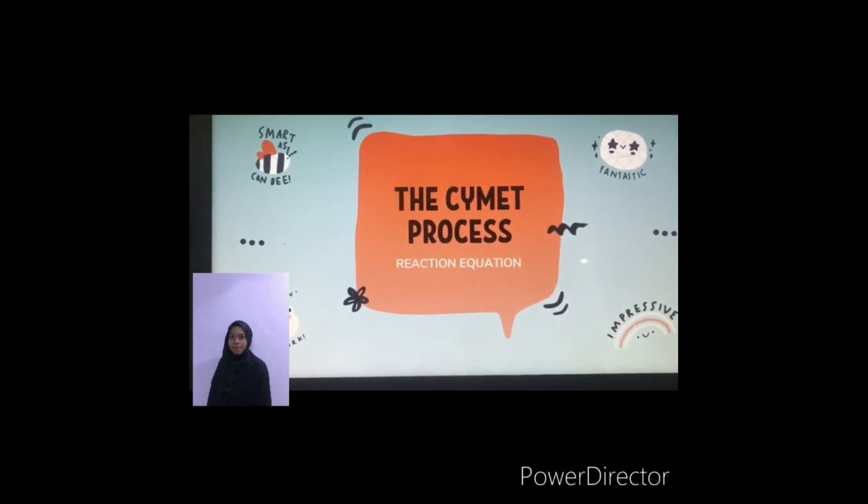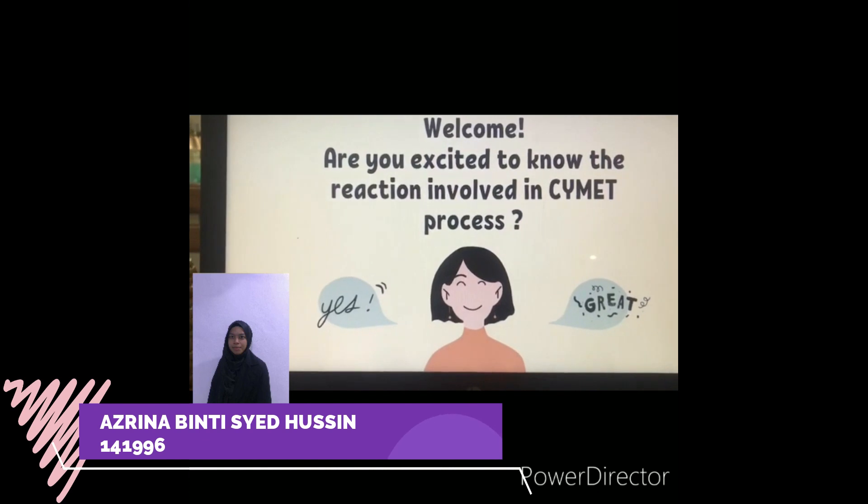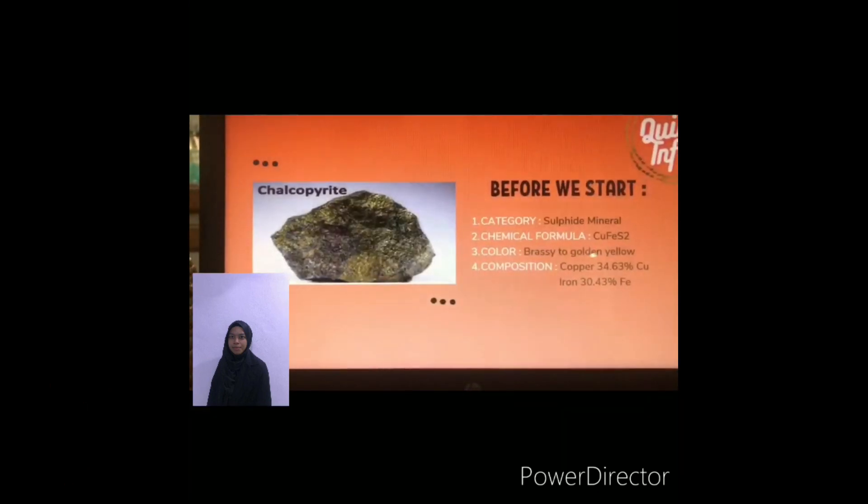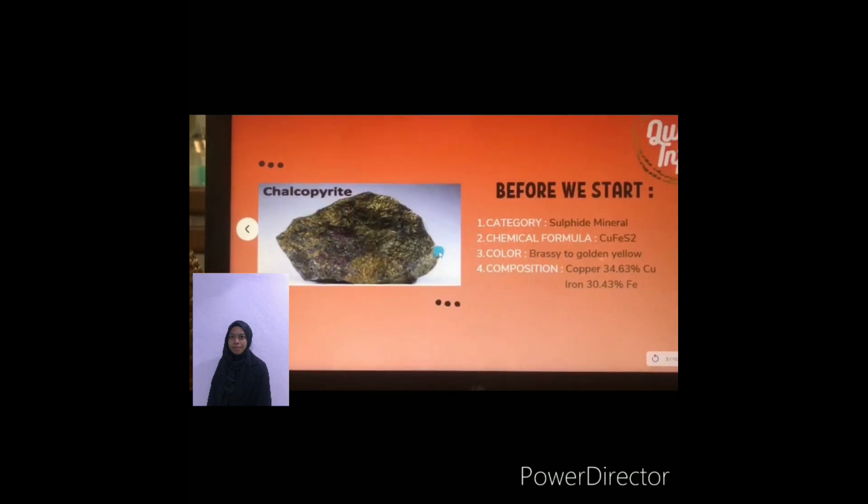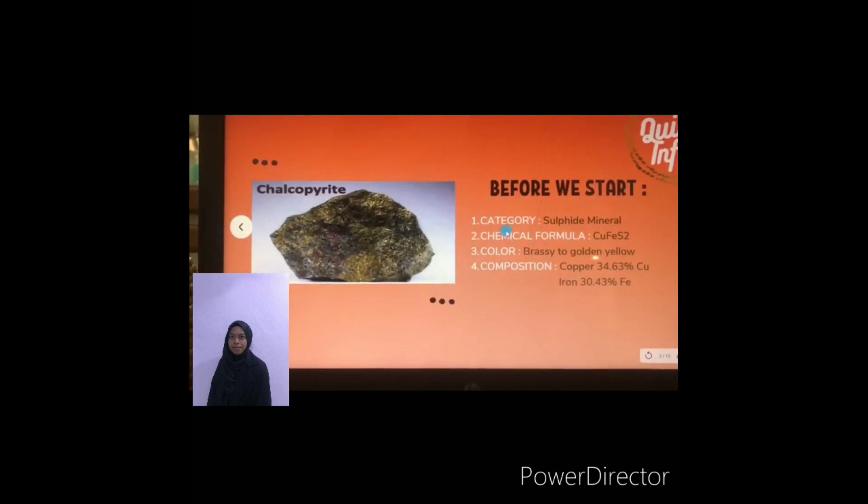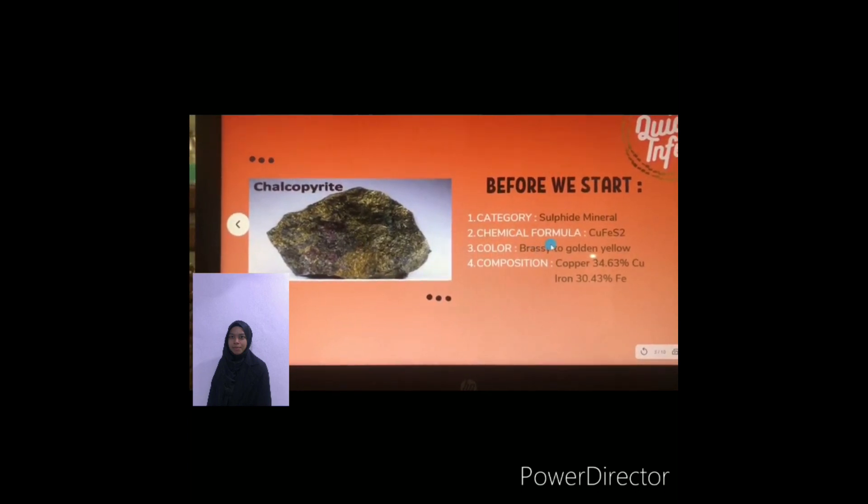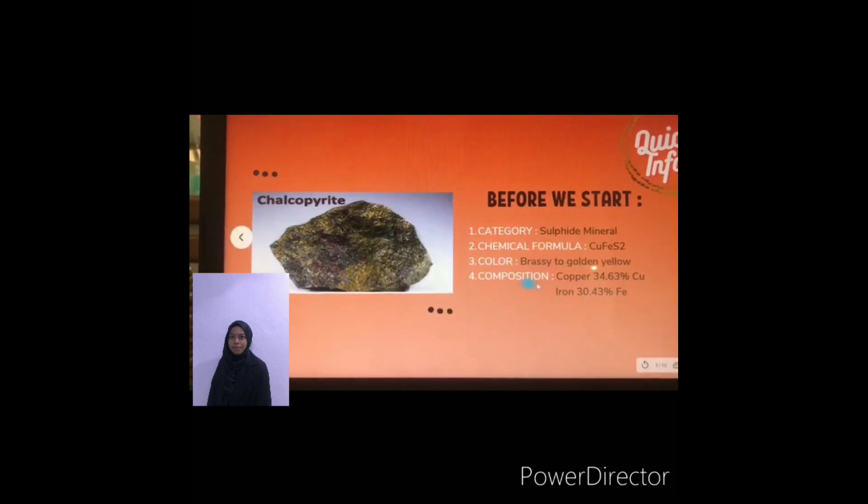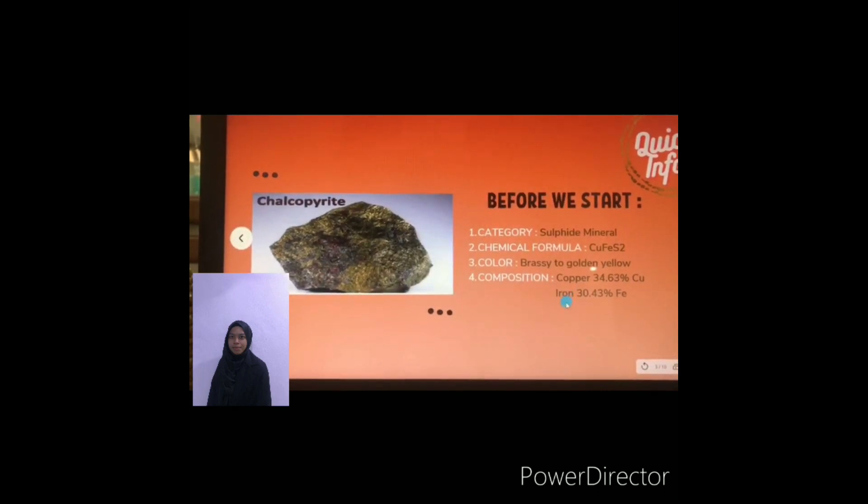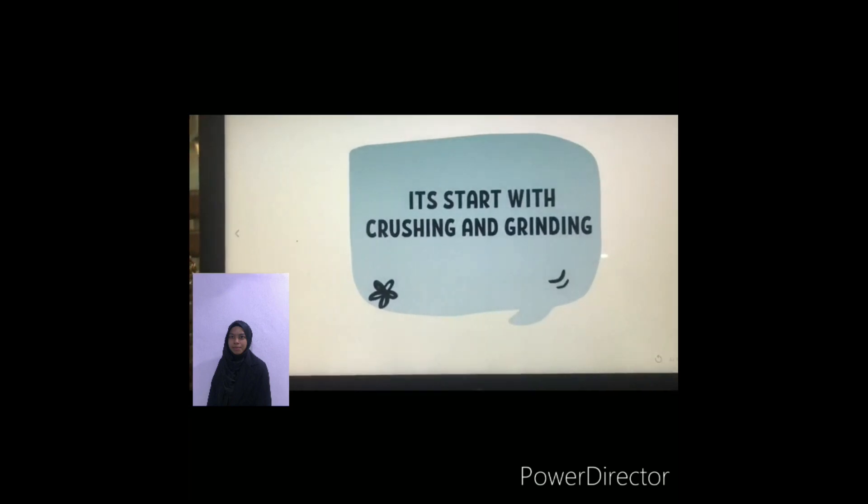We continue with the reaction of the Cymbal process. Are you excited to know the reaction of the Cymbal process? Of course, yes. First of all, before we start, I want to introduce to you all about chalcopyrite. Chalcopyrite is the category of sulfur mineral, chemical formula as we know as CuFeS2. The color is fresh into golden yellow. The composition in chalcopyrite is of iron and sulfur.